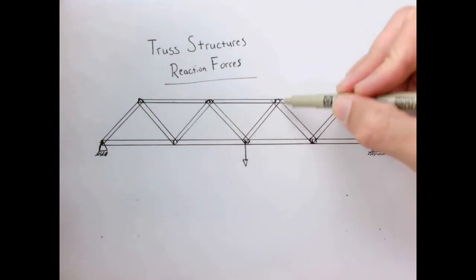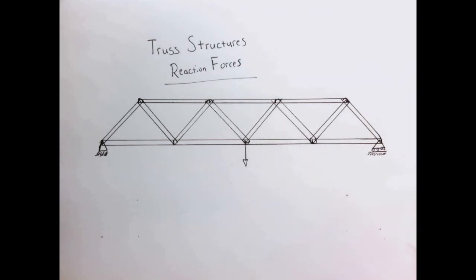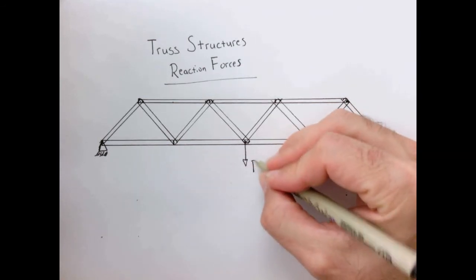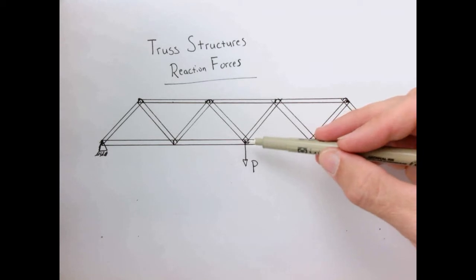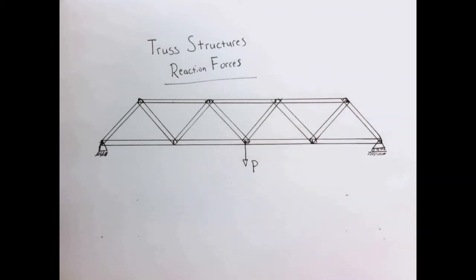We have a bunch of members all connected together, and we're going to have some weight here that I'll call P. Imagine a car driving across this bridge and it parks in the middle. So the question is, what are the reaction forces at the ground?